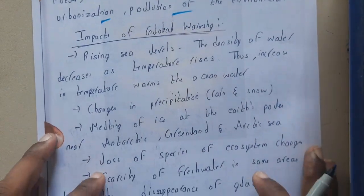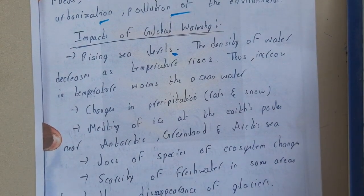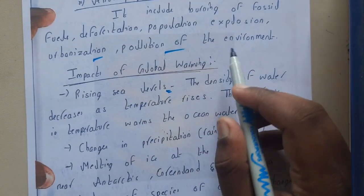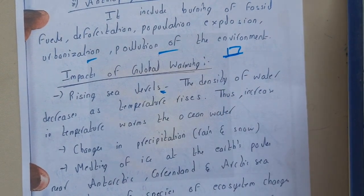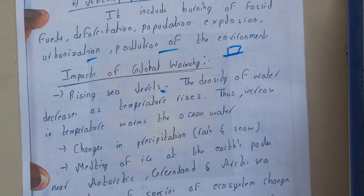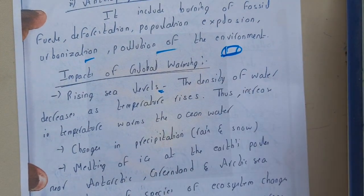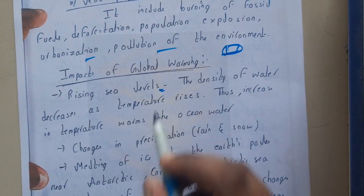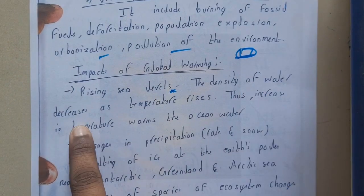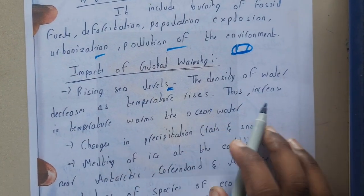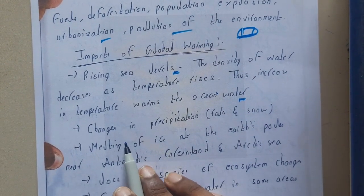One major impact of global warming is the rise in sea level. As temperature increases, ice in places like Antarctica and Arctic icy zones starts melting, which indirectly increases the water level — that is, the sea level. Also, the density of water decreases as temperature increases, so the rising temperature further increases ocean levels.